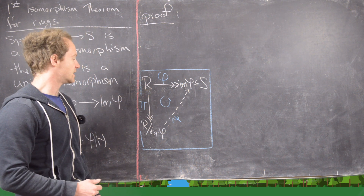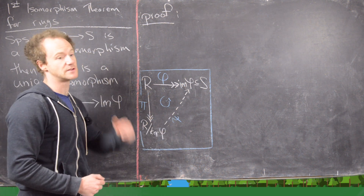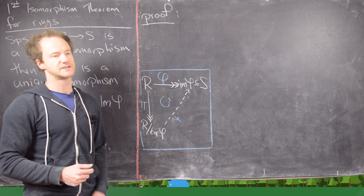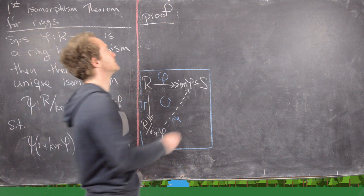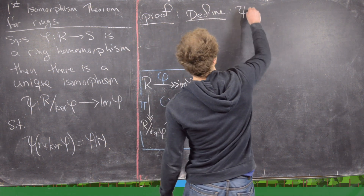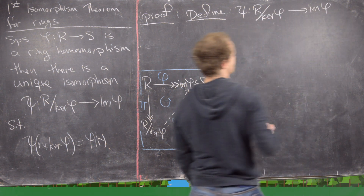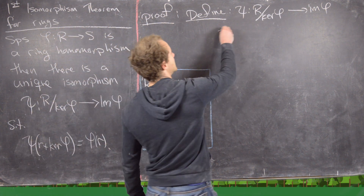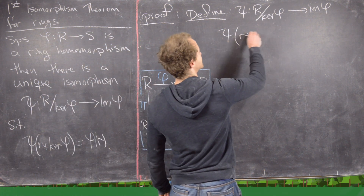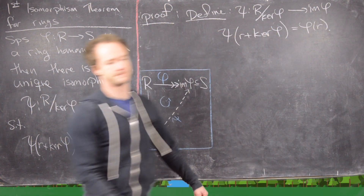The first thing I want to show is that this function psi that we're going to define is in fact well defined. Once we have that it's well defined, we can check that it's a homomorphism — which is pretty easy — and that it is unique. So let's go ahead and define psi. It's going from R mod the kernel of phi up to the image of phi, which is a subring of S. Since the domain consists of cosets, it takes the coset R plus kernel of phi up to phi of R.